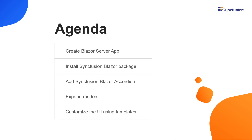In this video I will explain how to create a Blazor application and add the Syncfusion Blazor package. Then I will show you how to add the Syncfusion Blazor accordion component to a Blazor server application. After creating the accordion, I will explain the prominent features like expand modes and how to customize the accordion UI using templates.